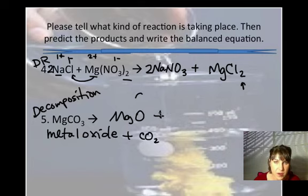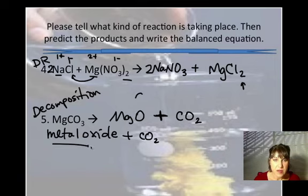So we're going to make, magnesium's a metal. We're going to make magnesium oxide, MgO. And they also make carbon dioxide. Every single time a carbonate compound decomposes, it's going to make the metal oxide and carbon dioxide.